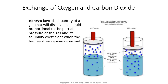The last gas law is Henry's law, which talks about the quantity of gas that will dissolve into a liquid — essentially what your respiratory system wants to do. Henry's law states that the quantity of gas that will dissolve in a liquid is proportional to the partial pressure of the gas and its solubility coefficient when temperature remains constant. We assume body temperature stays relatively constant, and then we look at the partial pressures of gases and how likely they are to dissolve in blood — we want oxygen to dissolve in, but not nitrogen.